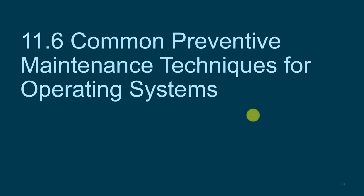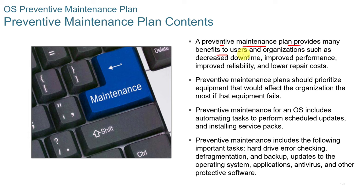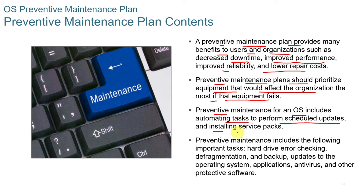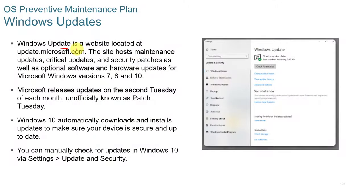Common Preventative Maintenance Techniques. A good preventative maintenance plan provides benefits such as decreased downtime, improved performance, improved reliability, and lower repair costs. Plans should prioritize equipment whose failure would most affect the organization. Maintenance for an OS includes automating scheduled updates, installing service packs, hard drive error checking, defragmentation, backups, OS and application updates, and antivirus checks. Windows Update at update.microsoft.com hosts maintenance updates, critical updates, and security patches. Microsoft releases updates on the second Tuesday of each month, known as Patch Tuesday. Windows 10 automatically downloads and installs updates, and you can manually check via Settings > Update and Security.